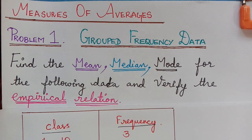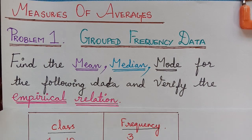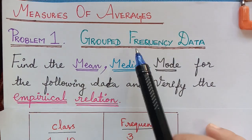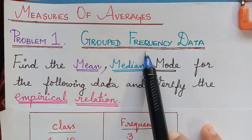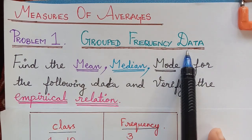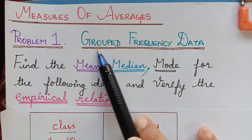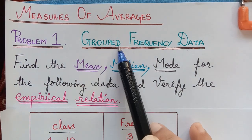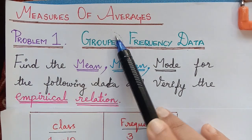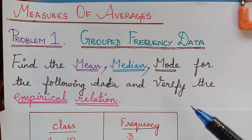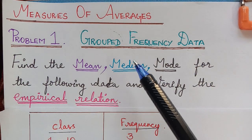Dear students, under the topic measures of averages, here we have the first problem under grouped frequency data. Whenever the data is given in the form of groups, that is whenever they are given in class intervals, we have to apply the following method in order to solve the given problem.